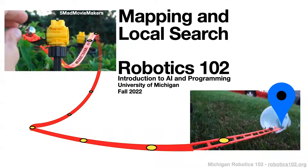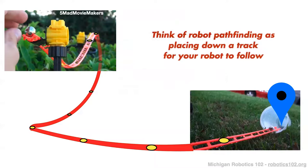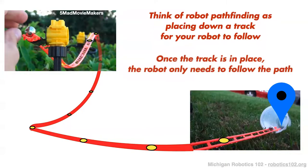We're thinking about autonomous navigation overall. We should think about our problem for doing navigation. We can think of robot pathfinding as placing down a track in space. Once we've placed down that track, our robot can follow it and reach its goal. Think of the robot as a marble — we go through the process of laying down this track, and that'll be the path the marble follows.